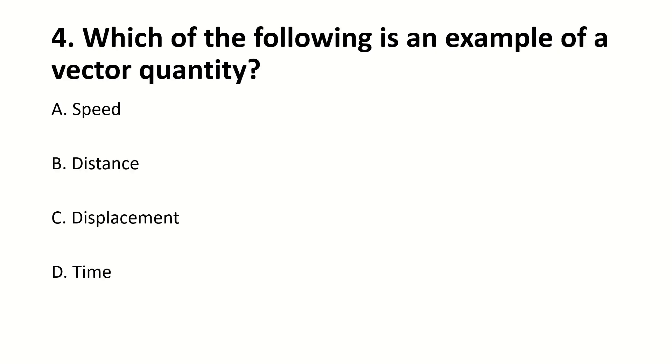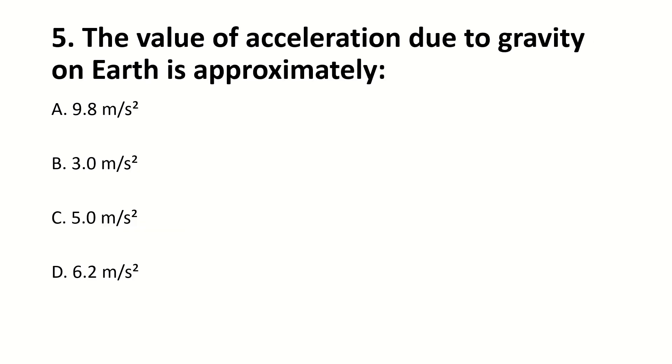Which of the following is an example of vector quantity? Answer is C, displacement. The value of acceleration due to gravity on Earth is approximately? Answer is A, 9.8 m per second square.